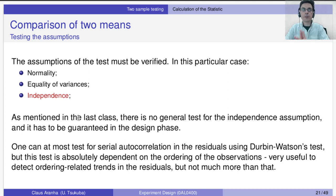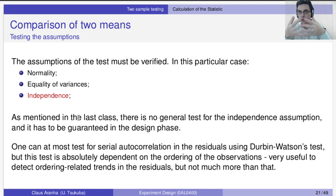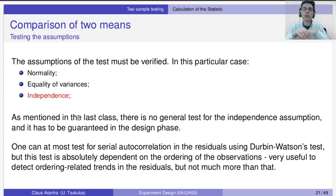We can also perform the Fligner test, which is a hypothesis test that tells us if the variances between two samples can be assumed similar or different. In this case we get a p-value of 0.2, so it's very likely we cannot reject the null hypothesis that the variances of the two samples are the same. Finally, for independence, there is no general test — we need to guarantee through experimental design that our observations are independent.